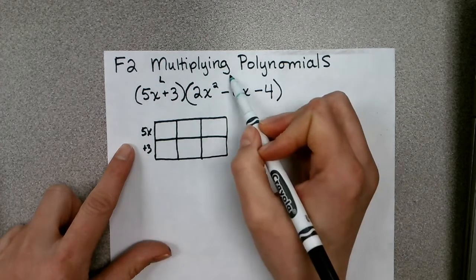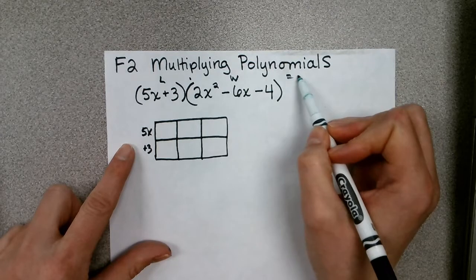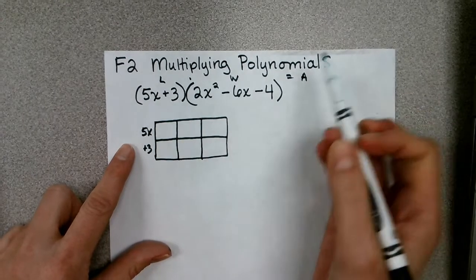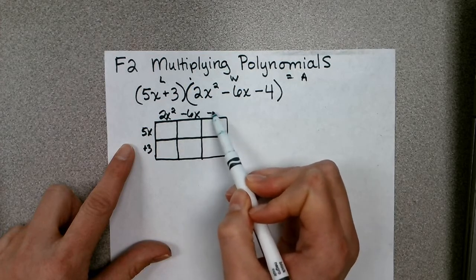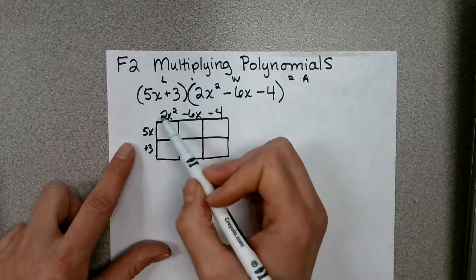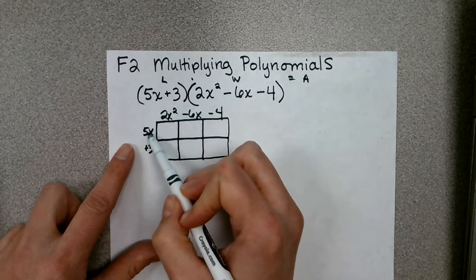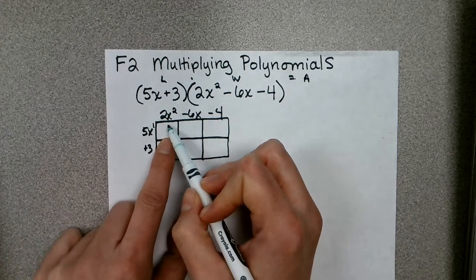So this will act as your length, 5x plus 3, and this polynomial will act as your width. Again we're multiplying those to equal our area or our product. So I'd have 2x squared minus 6x minus 4. Now when I find the areas, I think it will help to write this term here as 5x to the power of 1.